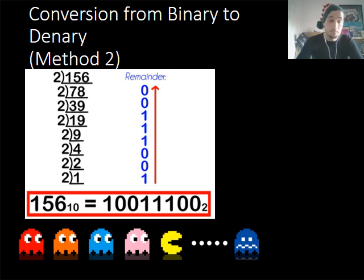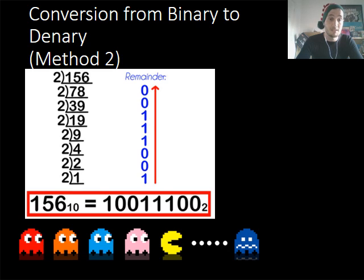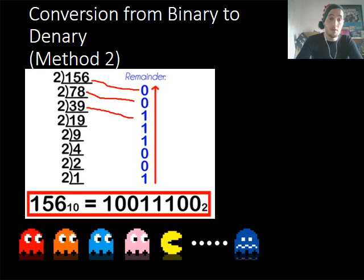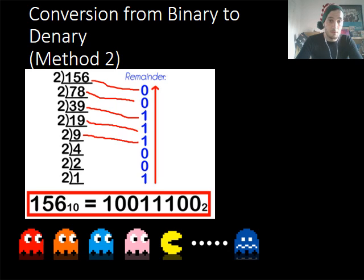There is another method you can use: divide the number by 2 each time. So if you've got a larger number like 156 — 156 divided by 2 goes into 78, remainder 0. 78 divided by 2 is 39. 39 divided by 2 is 19 remainder 1. 19 divided by 2 is 9 remainder 1. 9 divided by 2 is 4 remainder 1. 4 divided by 2 is 2, remainder 0. 2 divided by 2 is 1.